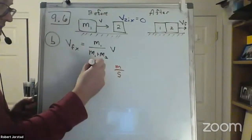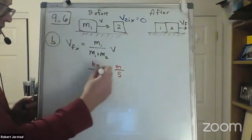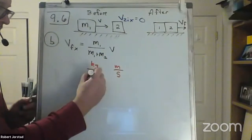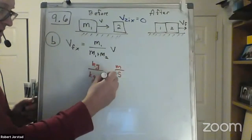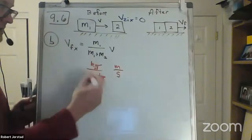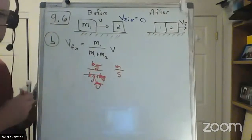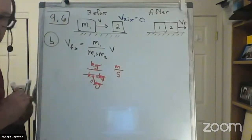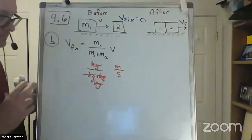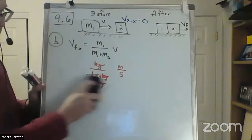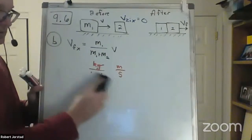This is meters per second. The units out front are kilograms over kilograms plus kilograms, which is kilograms over kilograms — they cancel out. This is a classic physics trick: when we write algebraic expressions, something with no units times something with the correct units. Meters per second looks good.